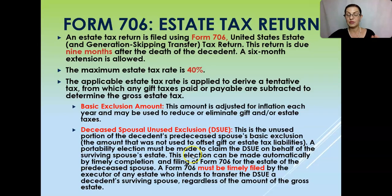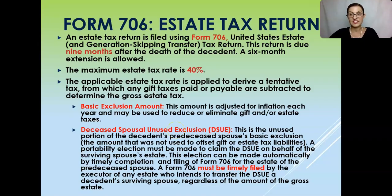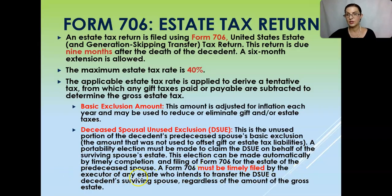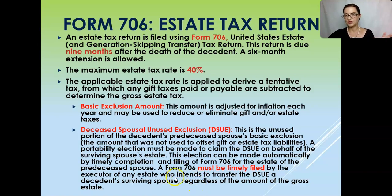In order to claim the DSUE, the surviving spouse or the executor for the deceased spouse has to file a Form 706. So even if the deceased spouse's estate doesn't have a filing requirement, a Form 706 still has to be filed by the executor or the surviving spouse in order to claim the DSUE and make the portability election — regardless of the amount of the gross estate.